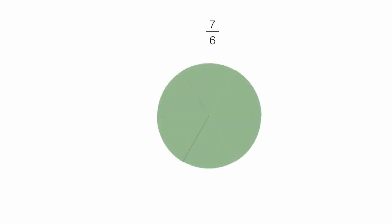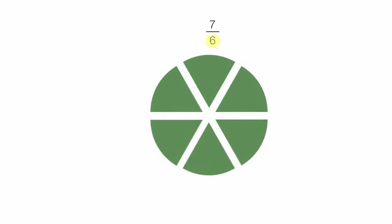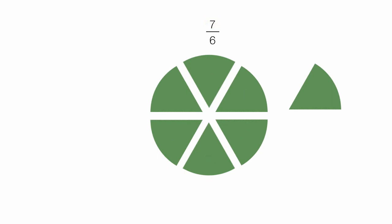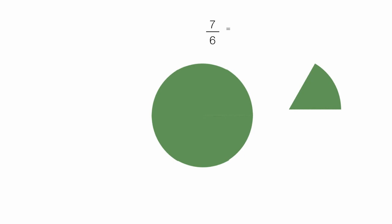Now let me show you 7 sixths. We have a circle and we cut it into 6 different pieces — that's what the denominator means, to cut it into 6 pieces. I have 1, 2, 3, 4, 5, 6 pieces, but I need 7. So I need to add 1 more piece, or 1 more sixth. So I have 7 pieces, and each piece is equal to 1 sixth of the pie. So like before, it's 1 and 1 sixth.